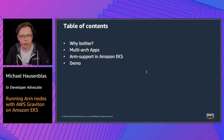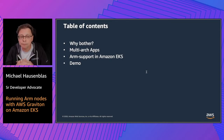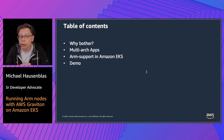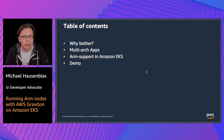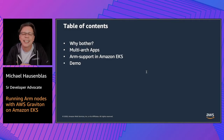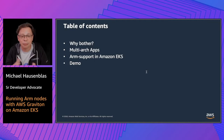First we're going to talk about why you should bother, why that topic is important. Then we will have a look at multi-architecture applications, containerized microservices. Then we will have a look at the current state of ARM support in Amazon EKS, specifically around Graviton and Graviton2. And last but not least, I'm going to show you ARM on Amazon EKS in action.